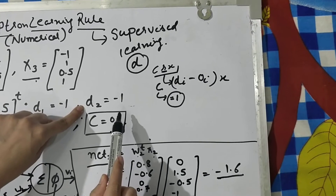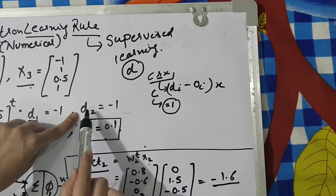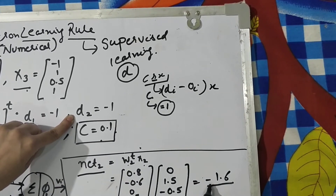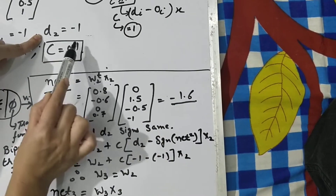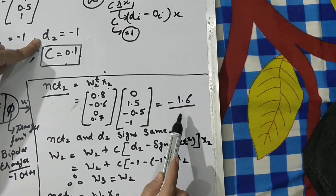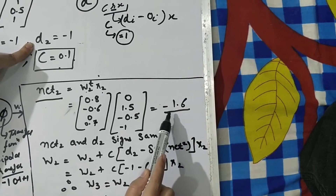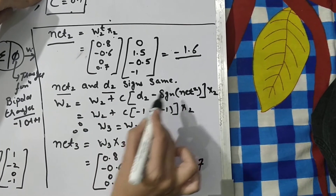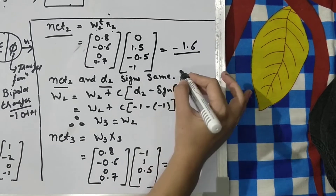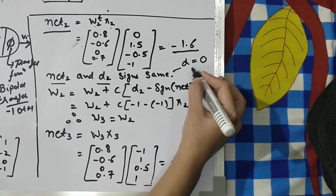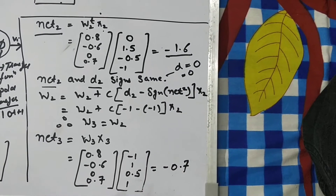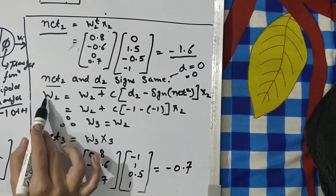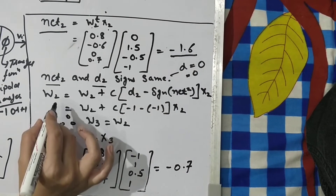Since net2 is negative, the sign is -1. We compare this with the desired output d2=-1. The neural network desired output is -1 and the actual output is also -1, so both are matching. According to the perceptron learning rule, when desired and actual both match, you do not update the weights — the error is zero. So at this step, w2 remains unchanged.